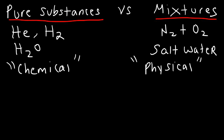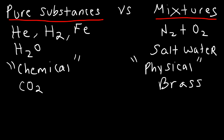Carbon dioxide is a compound, and since it's a single compound, it's a pure substance. Iron metal is a pure element, which also makes it a pure substance. Brass, however, is known as an alloy — a substance composed of multiple metals. In the case of brass, it's composed of copper and zinc, making it a solid solution of two metals, so brass is a mixture.